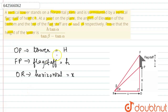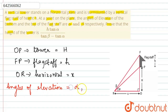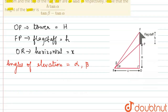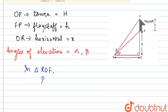The horizontal distance OR is taken as x. The angles of elevation are alpha and beta. Now we will start the solution. First, we will look at the bigger triangle ROF and apply tan to the angle beta.